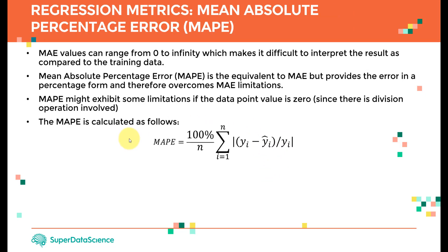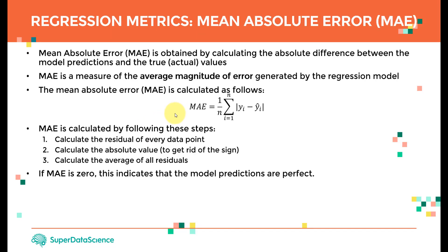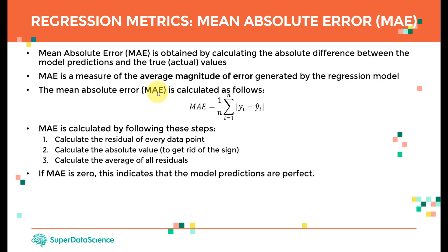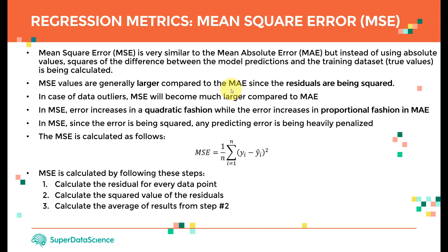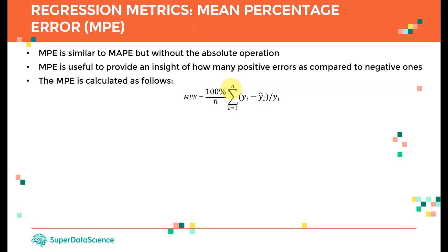Let's recap what we have done in the previous lecture. We covered a quick overview of regression metrics — how to assess the model by calculating the error or residuals between what the model is predicting, which is y-estimated or predicted, and the actual value y-i. We calculated the mean absolute error, mean square error, root mean square error, mean absolute percentage error, and mean percentage error.